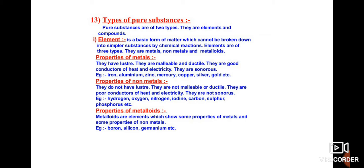Elements are the basic form of matter which cannot be broken down into simpler substances by chemical reactions, because they are made up of the same type of atoms. Elements have been classified into three types: metals, non-metals, and metalloids.